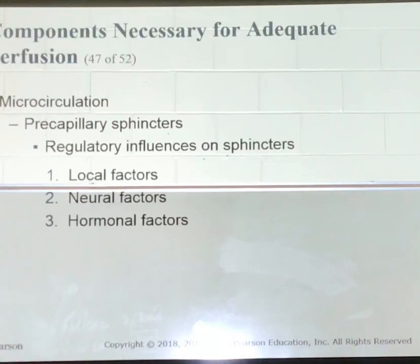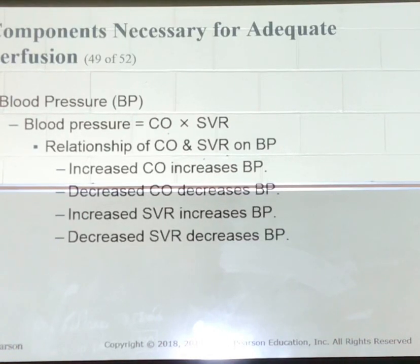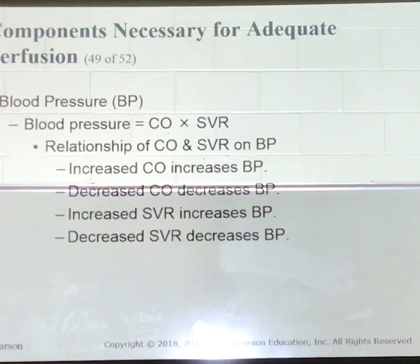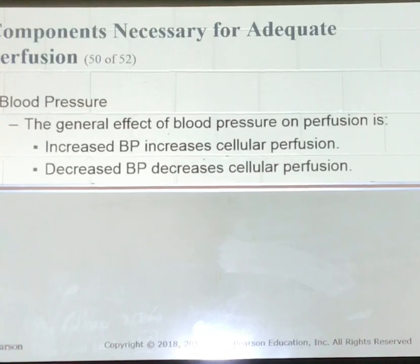You have neural factors, which include your sympathetic and parasympathetic nervous systems, and some hormonal factors. The body's compensatory mechanisms are geared towards maintaining pressure inside the vessel and perfusion of the cells. That's the key takeaway here.